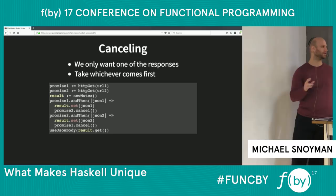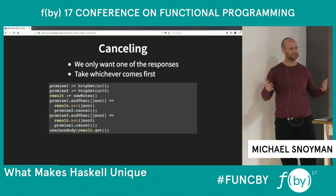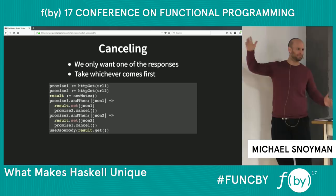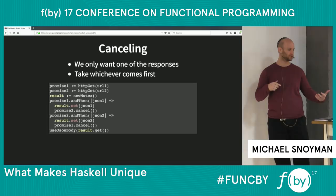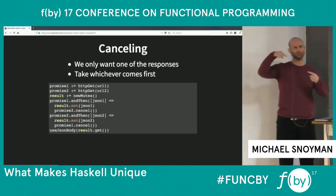Now let's change the game a bit. Instead of needing both JSON bodies, let's say I only care about one — whichever comes back first. Say it's two cached resources from two different servers; whichever one arrives first is the one I want to use, and I want to cancel the other so it doesn't continue doing any work. In most languages you'd spin off two futures or promises, create a mutex for the result value, use then-handlers to say what to do next, and from each handler cancel the other promise.